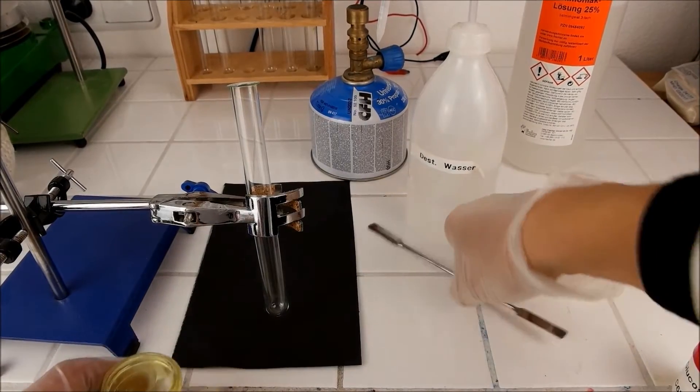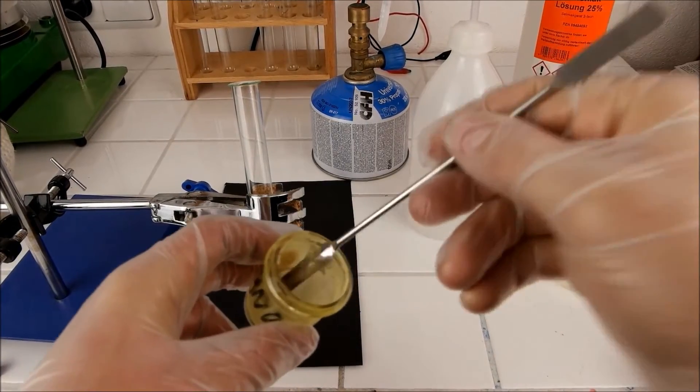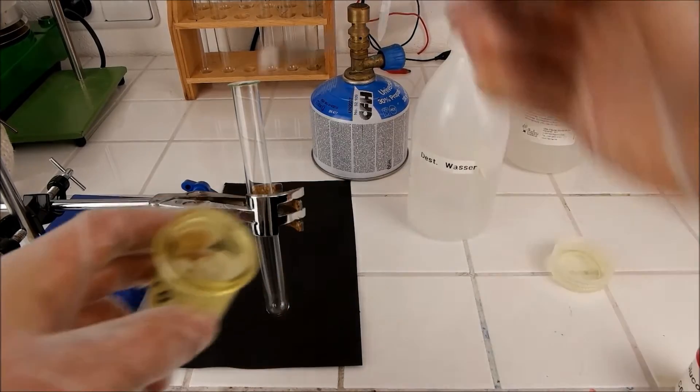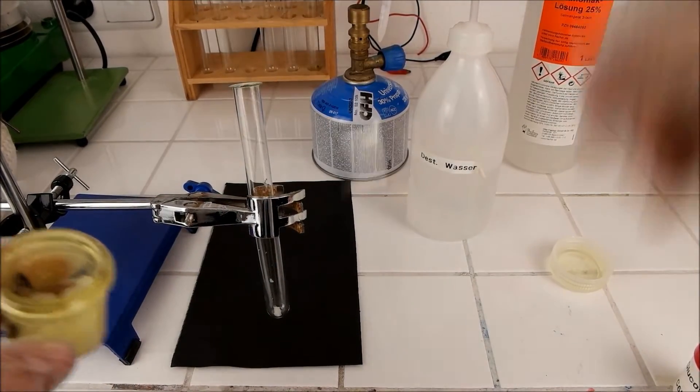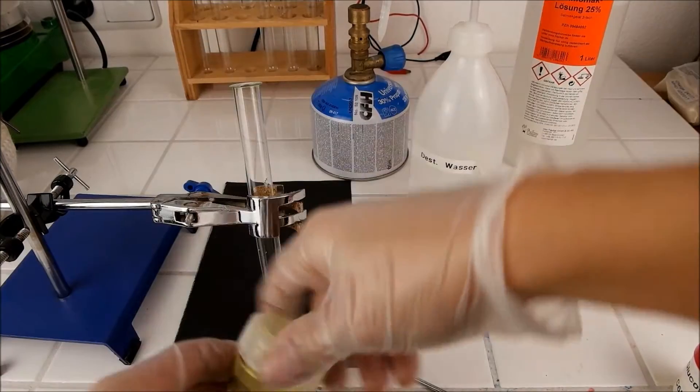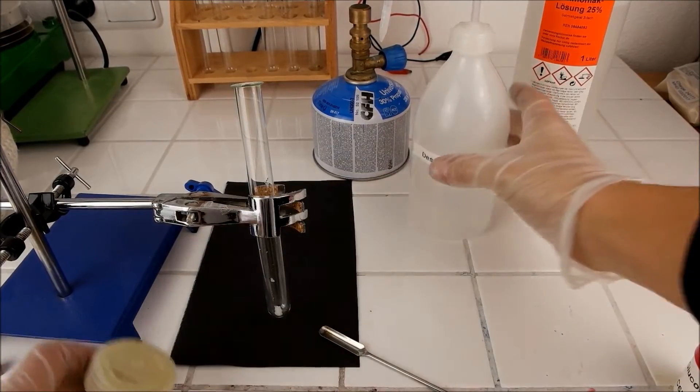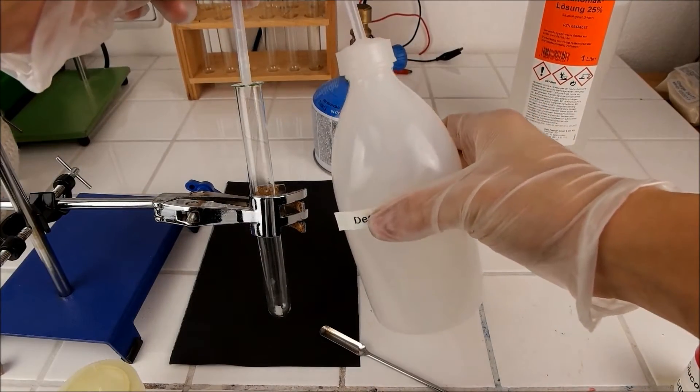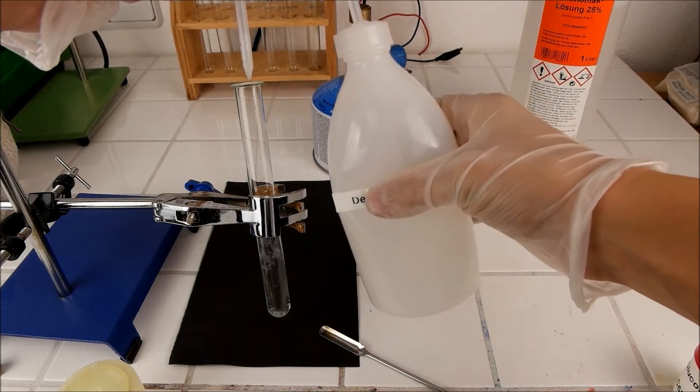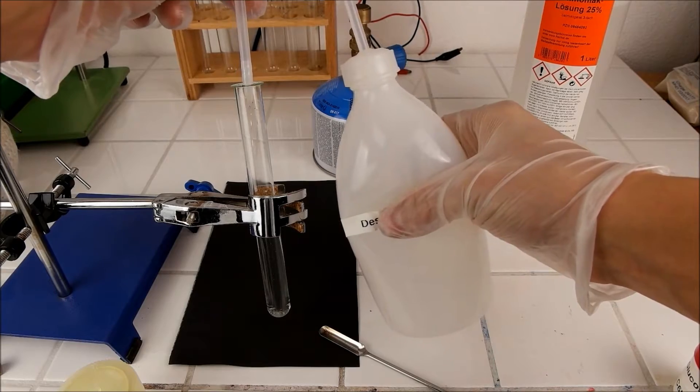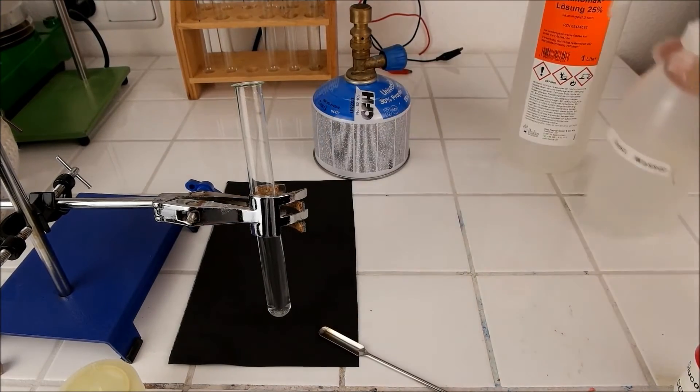The first step is to put a small amount of silver nitrate in the test tube, should be enough. And then I just add some distilled water, okay, should be enough.